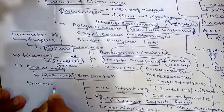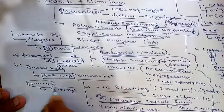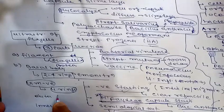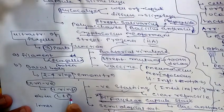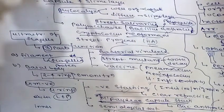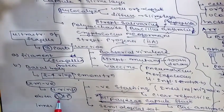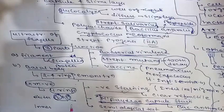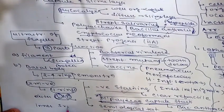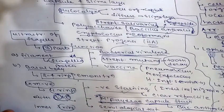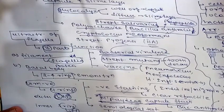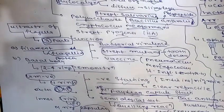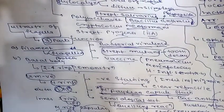In gram-negative bacteria there are four rings. The outer rings are the L ring (associated with the lipopolysaccharide outer layer) and the P ring (associated with the peptidoglycan layer). The inner rings are the S ring, located in the periplasmic space, and the M ring, which is directly in contact with the plasma membrane.